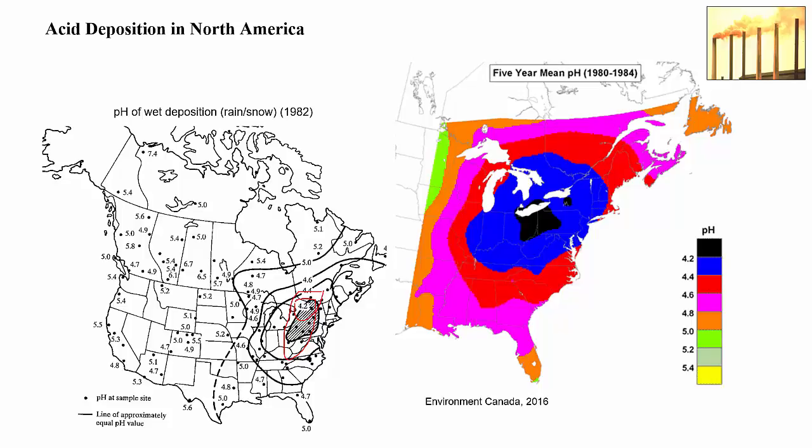This close-up of eastern North America shows mean pH of precipitation between 1980 and 1984, from Environment Canada, and shows similar trends. Remember that natural clean rain has a pH of 5.6, which is way below anything on this scale. Even in the high north of Canada and far out on the east coast, rain was very acidic compared to natural clean rain. As I will discuss, this situation has improved greatly since the 1980s; sulfur dioxide emissions have been greatly curtailed in both the US and Canada.